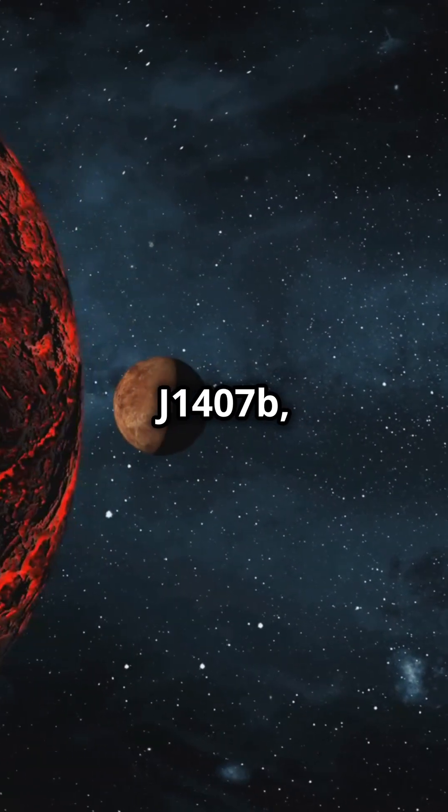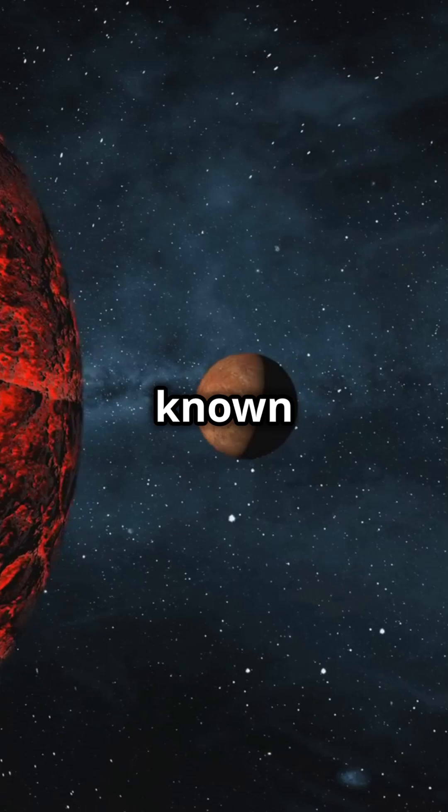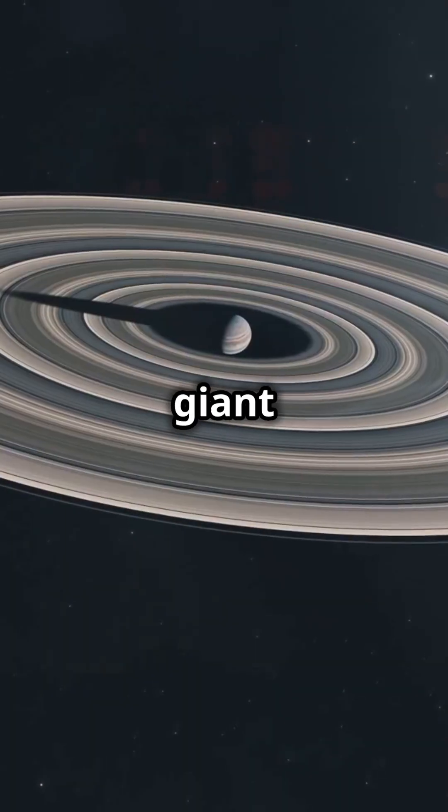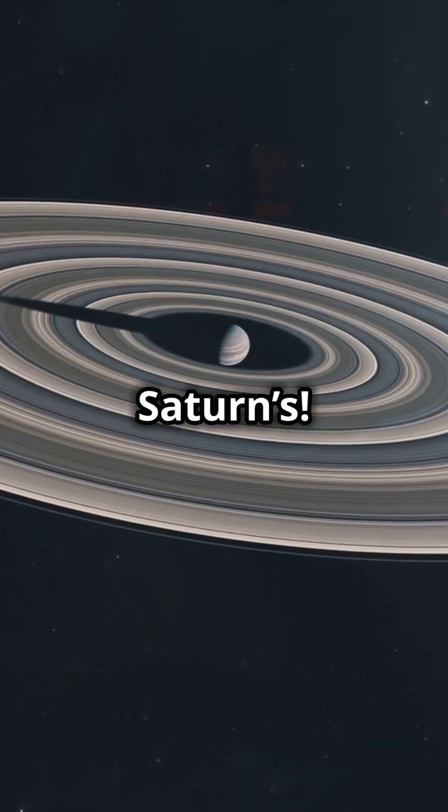Next we have J1407 b, also known as Super Saturn. Why? Because this gas giant has rings 200 times larger than Saturn's.